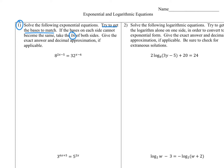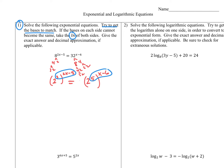Looking at the number 8, I know that's 4 times 2 times 2, so that's really 2 to the third power, raised to the (2x minus 5). Let's see if 32 can be made that way. 32 breaks down as 8 times 4, then 2 times 2 and 2 times 2 — that's a total of five 2s. So 32 is 2 to the fifth, raised to the (x minus 6). We have a power raised to a power, so we multiply the exponents. This gives us 2 to the (6x minus 15) equals 2 to the (5x minus 30).